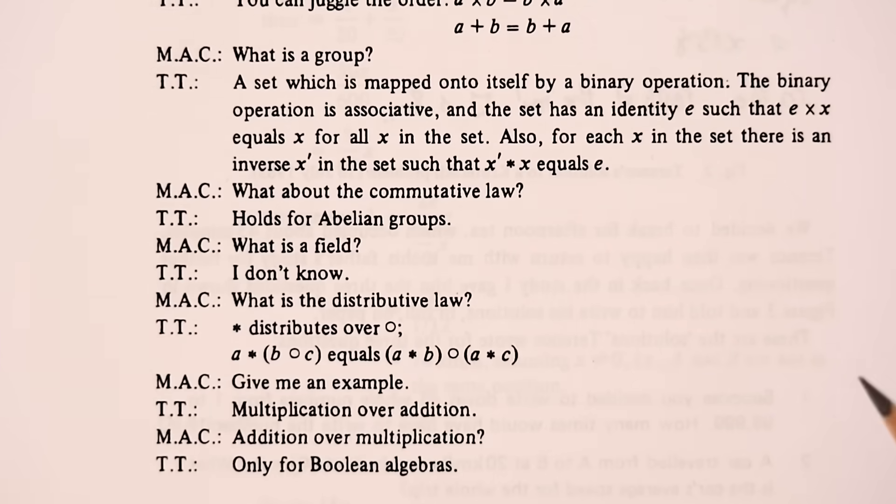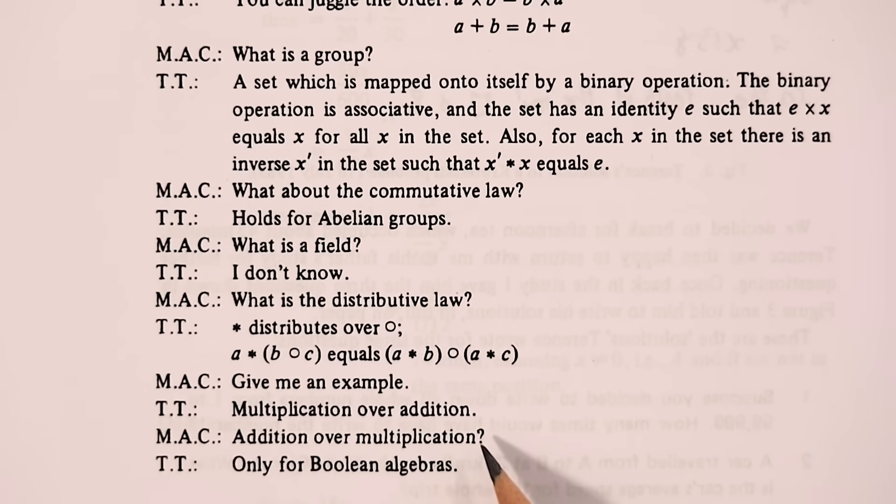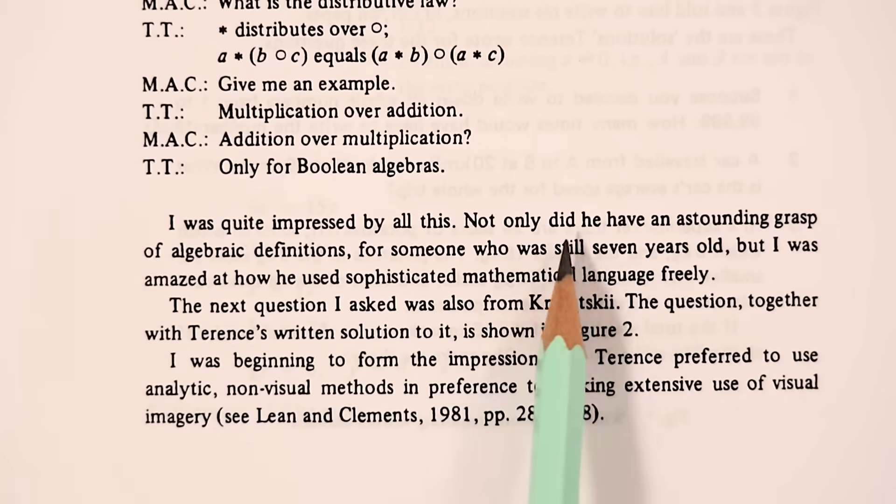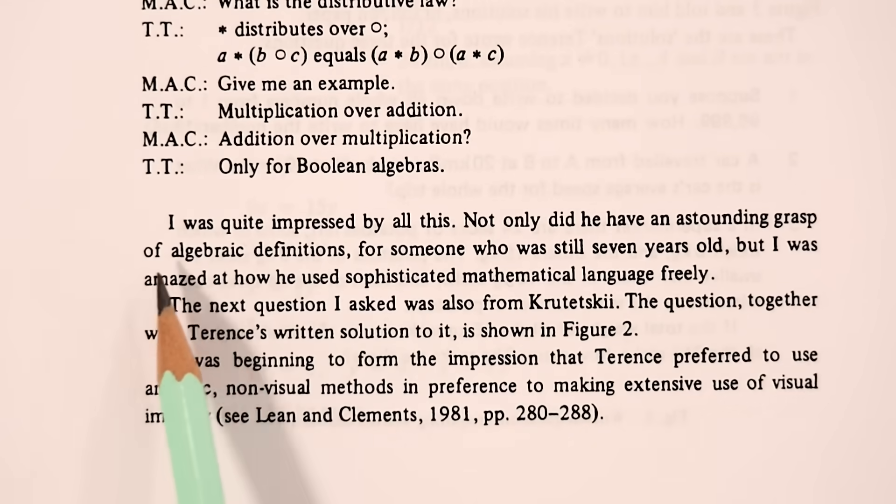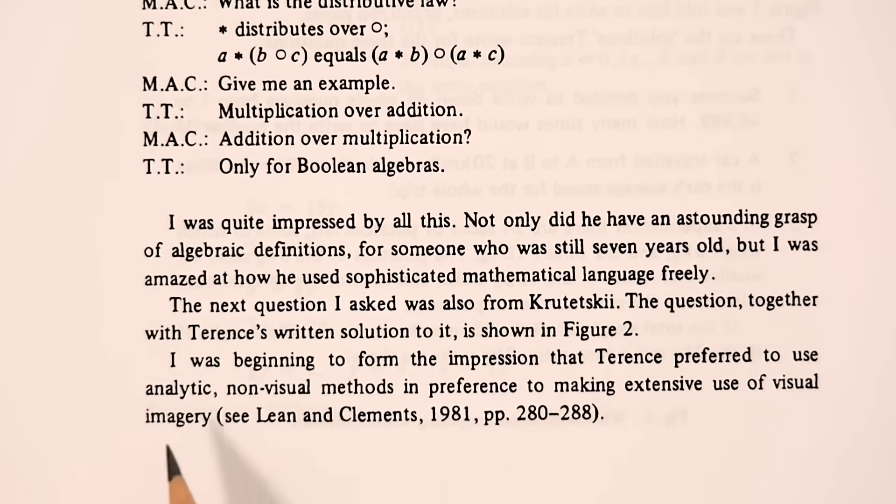He does, however, know about the distributive law, and gives the example multiplication over addition. Clements asks if addition over multiplication is an example. But Terence replies, only for Boolean algebras. Clements was quite impressed by all of this. Not only did he have an astounding grasp of algebraic definitions for someone who was still seven years old. But I was amazed at how he used sophisticated mathematical language freely. I was beginning to form the impression that Terence preferred to use analytic non-visual methods in preference to making extensive use of visual imagery.